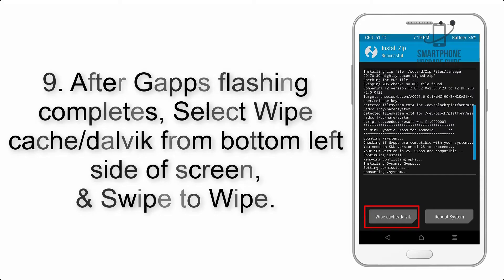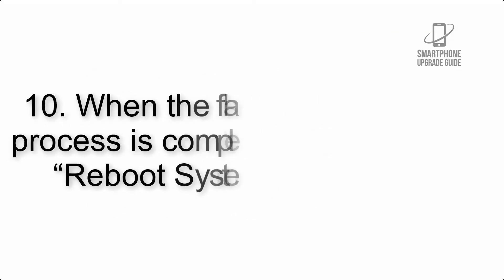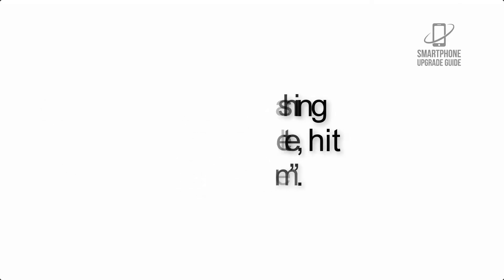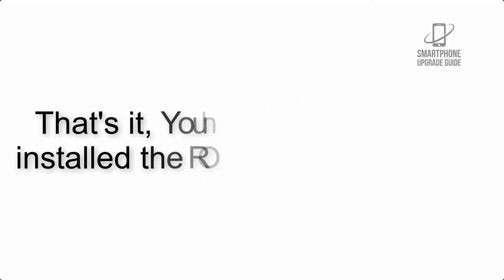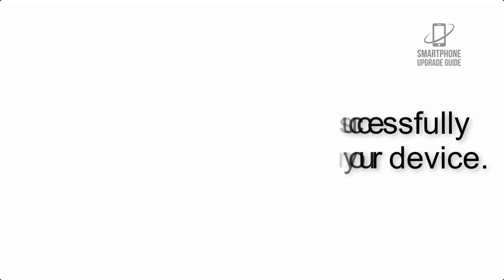Step 8: Flash the GApps zip package in the same manner. Step 9: After GApps flashing completes, select Wipe Cache and Dalvik from the bottom left side of the screen and swipe to wipe. Step 10: When the flashing process is complete, hit Reboot System. That's it — you have successfully installed the ROM on your device.